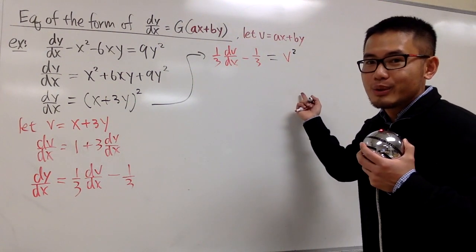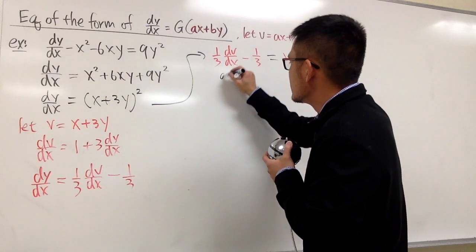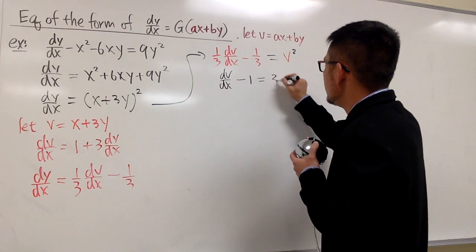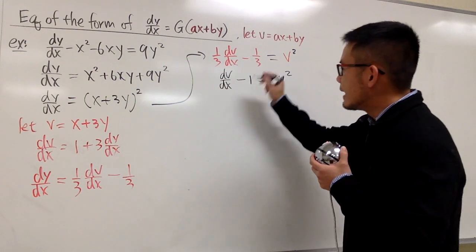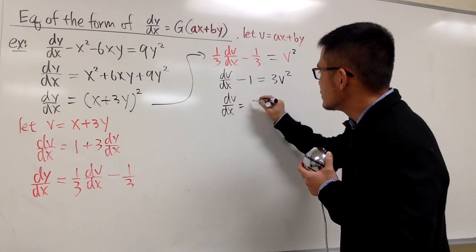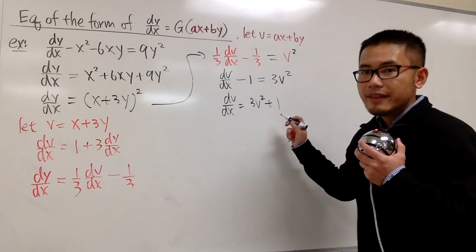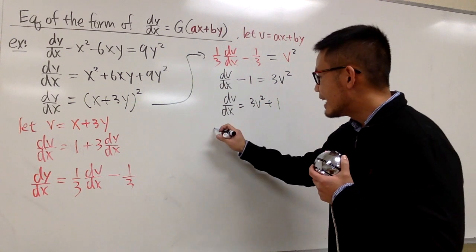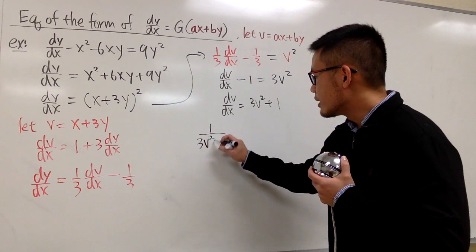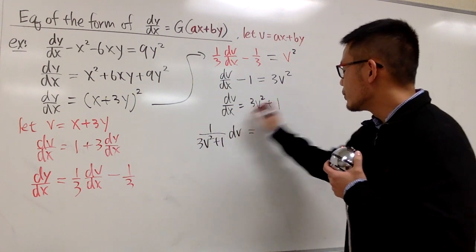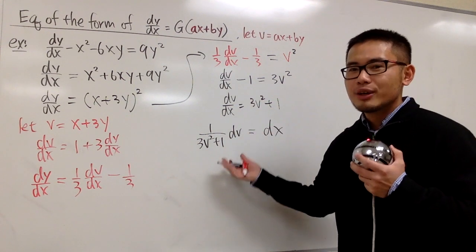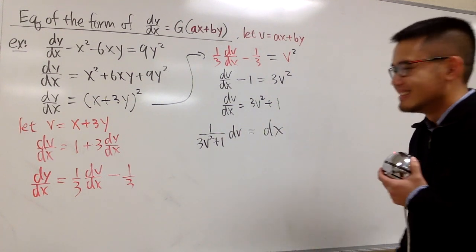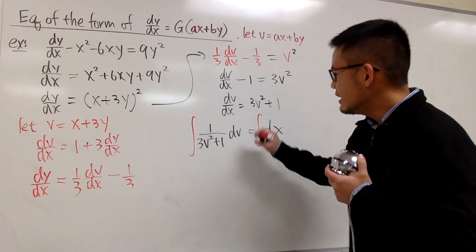We don't like fractions, so let's multiply everything by 3, giving dv/dx − 1 = 3v². Adding 1 to both sides: dv/dx = 3v² + 1. Now we can separate variables — divide by (3v² + 1) and multiply by dx — so we have (1/(3v² + 1))dv = dx. All the v's and dv's are together and dx is on the right.